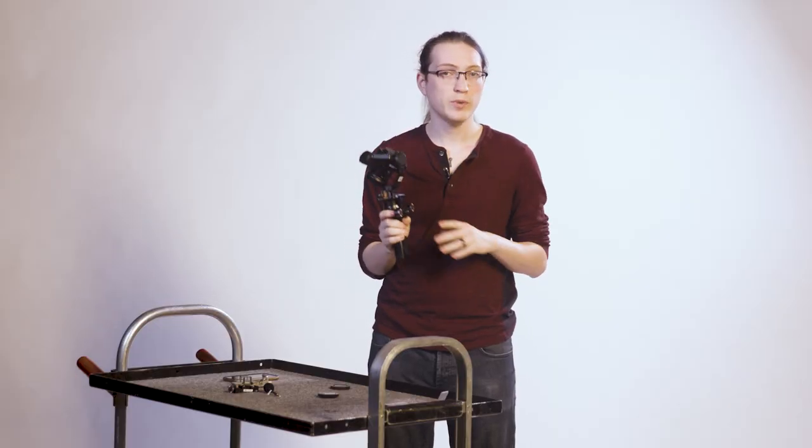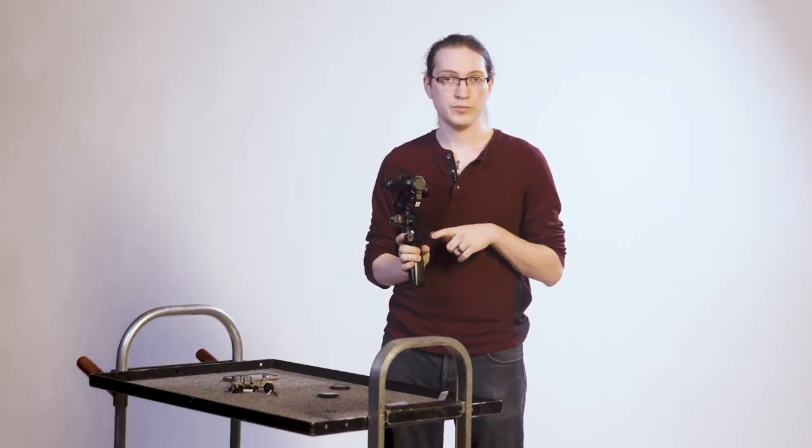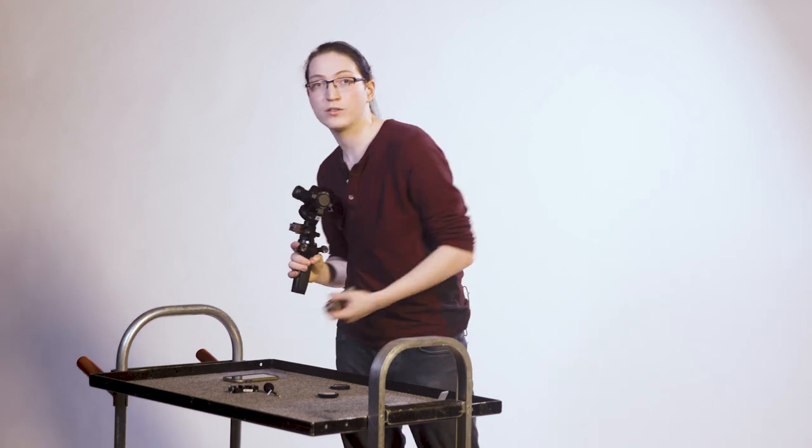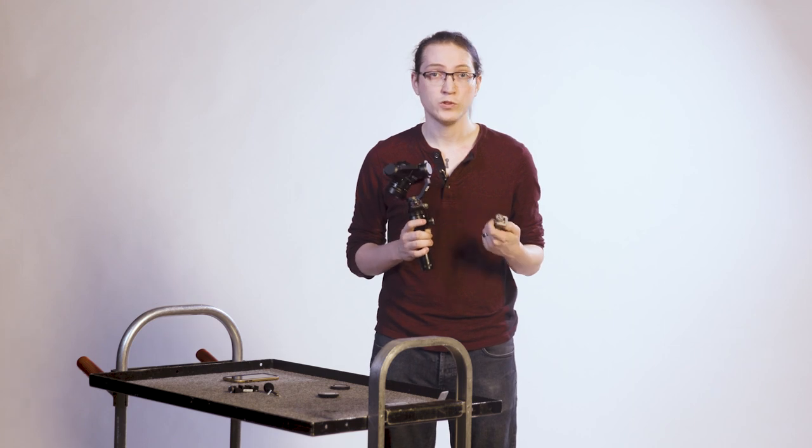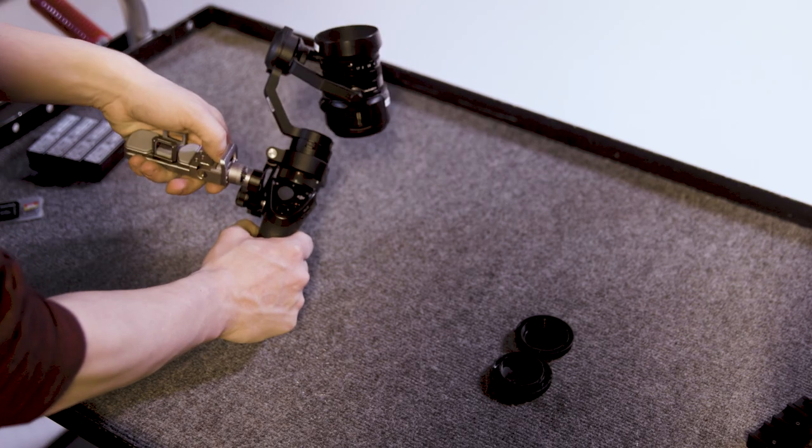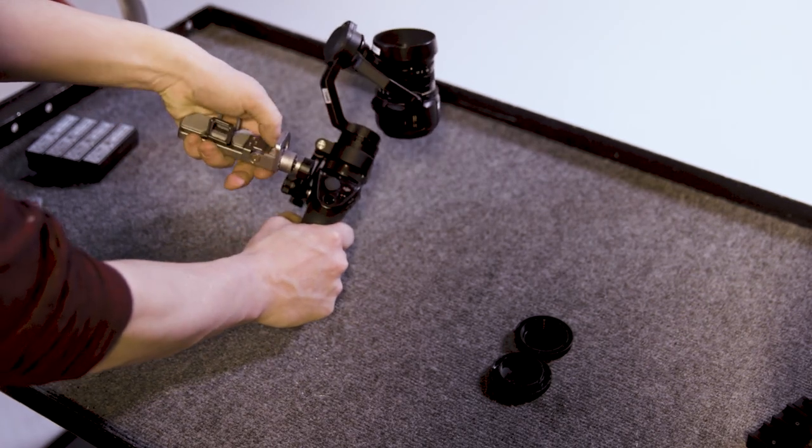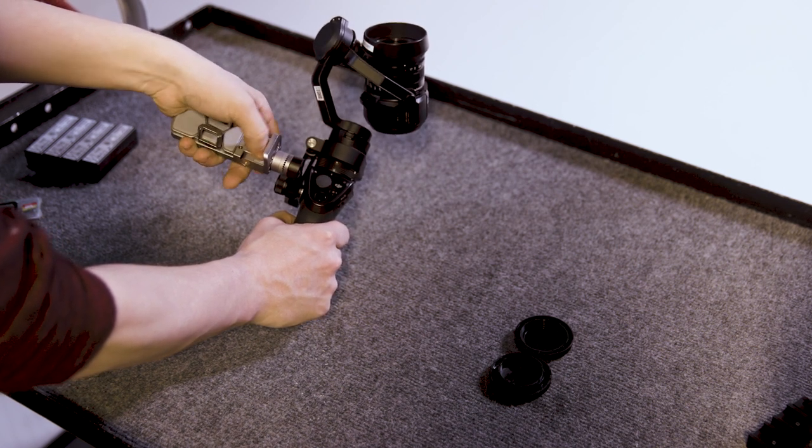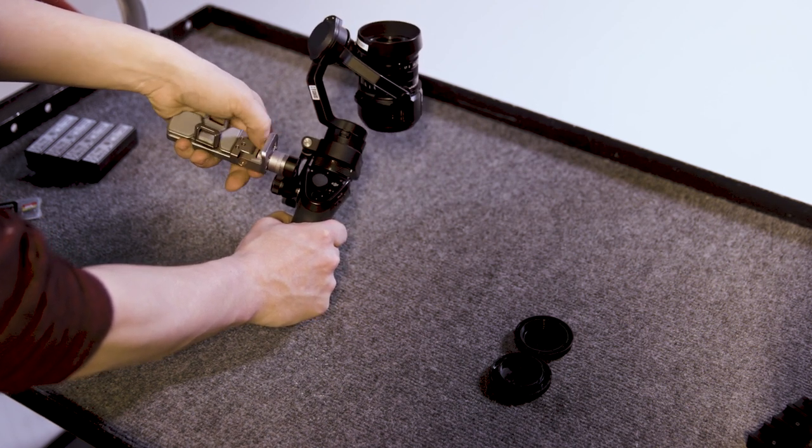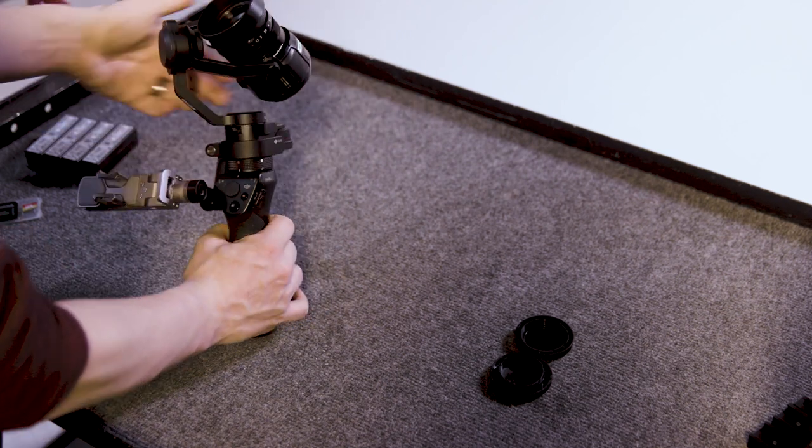You will then notice two mounting points on the left side of the handle. This is where we can attach the phone holder and the optional cheese plate with cold shoe mounts for accessories. To attach those, line up the mounting screw and twist the lock ring until it secures. A great feature, the two mounting points are both the standard 1/4-20 thread, opening up even more options for accessories.